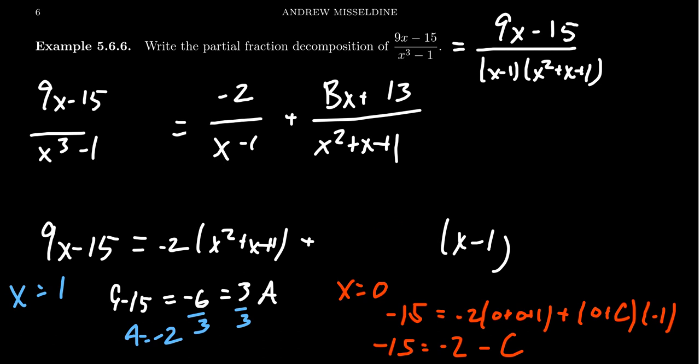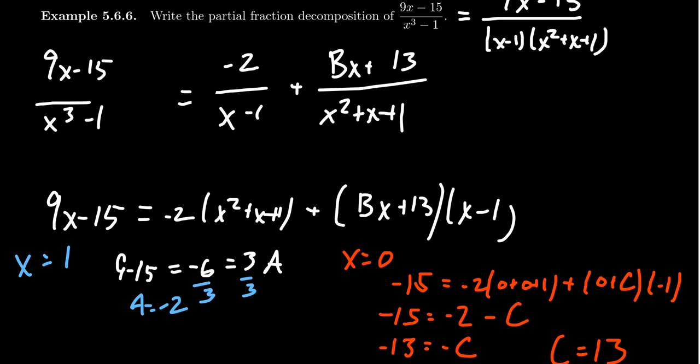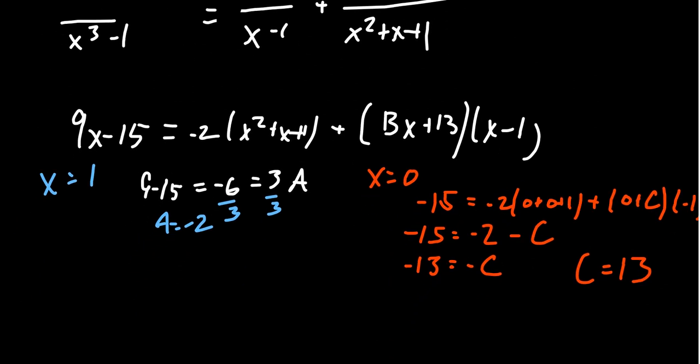We know what C is, C is 13. We plugged in 1 and got A, we plugged in 0 and got C. To figure out B, let's just plug in something else. We should plug in something easy to do arithmetic with, maybe like negative 1 or 2. Those are both fairly safe examples. I'm going to do x equals 2 so the arithmetic will be simple.